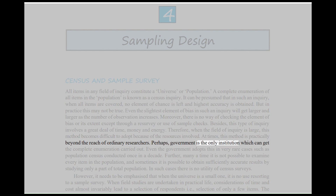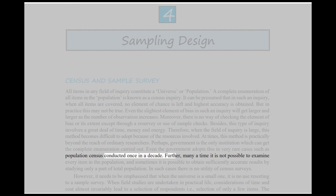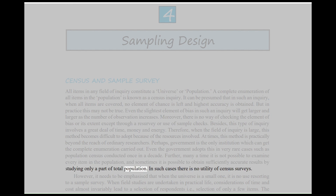Perhaps, government is the only institution which can get the complete enumeration carried out. Even the government adopts this in very rare cases such as Population Census conducted once in a decade. Further, many a time it is not possible to examine every item in the population, and sometimes it is possible to obtain sufficiently accurate results by studying only a part of total population. In such cases there is no utility of census surveys.